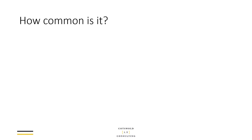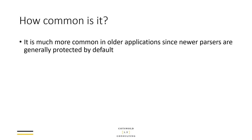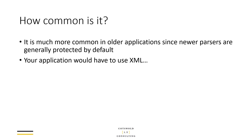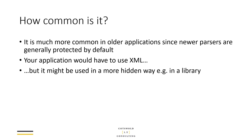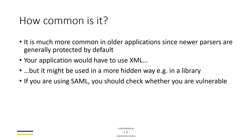In terms of how common this is, it's much more common in older applications because certain XML parsers were more vulnerable in earlier versions. Some of these vulnerabilities have since been patched and are more secure by default in newer parsers, whereas older parsers tended to allow these things by default. Your application would have to use XML to be vulnerable, but it might be hidden deep in a dependency, library, or API that you use.